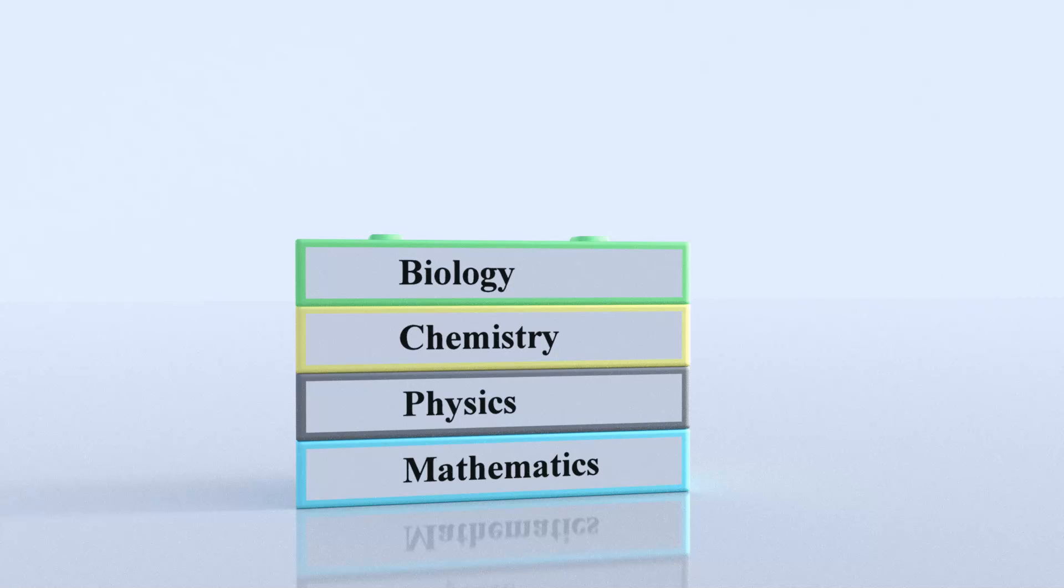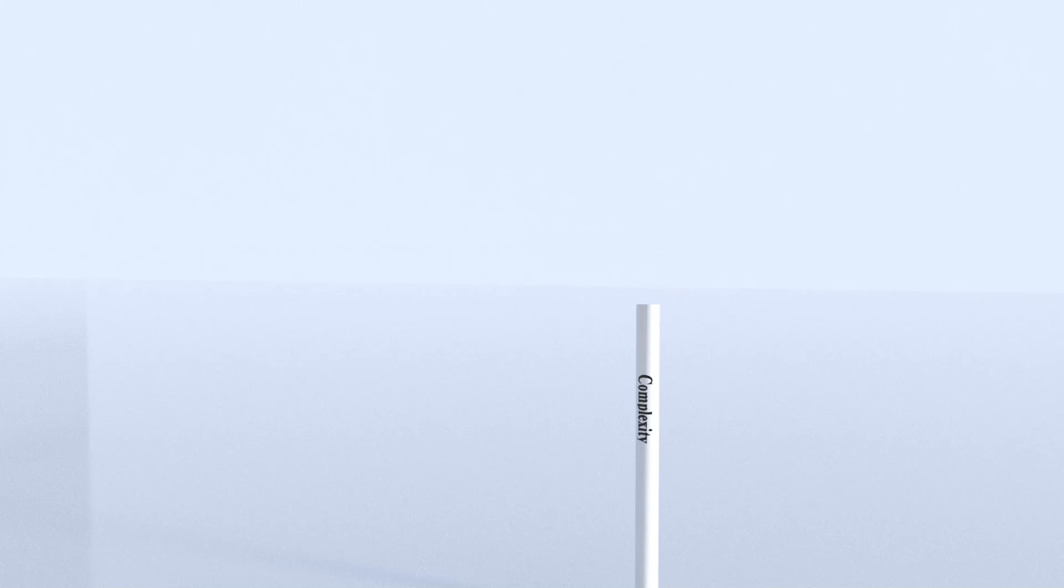We say that biology is based on chemistry, which in turn is based on physics, which is based on maths. What does this axis mean? Levels of abstraction? How about organizing these fields of study by complexity?